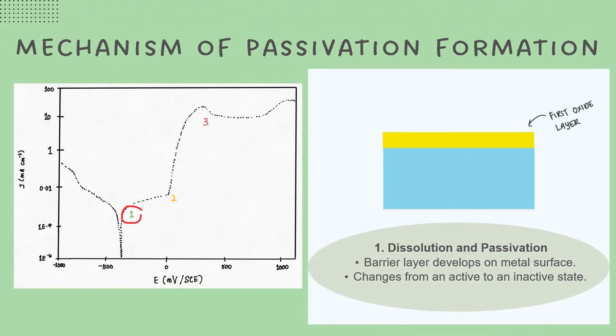Passivation is a process in which a barrier layer develops on a metal surface. A thin layer of oxide occurs on the newly exposed surface at first. The freshly formed oxide layer blocks any type of reaction since there are no moving electrons accessible, converting it from an active to an inactive state.